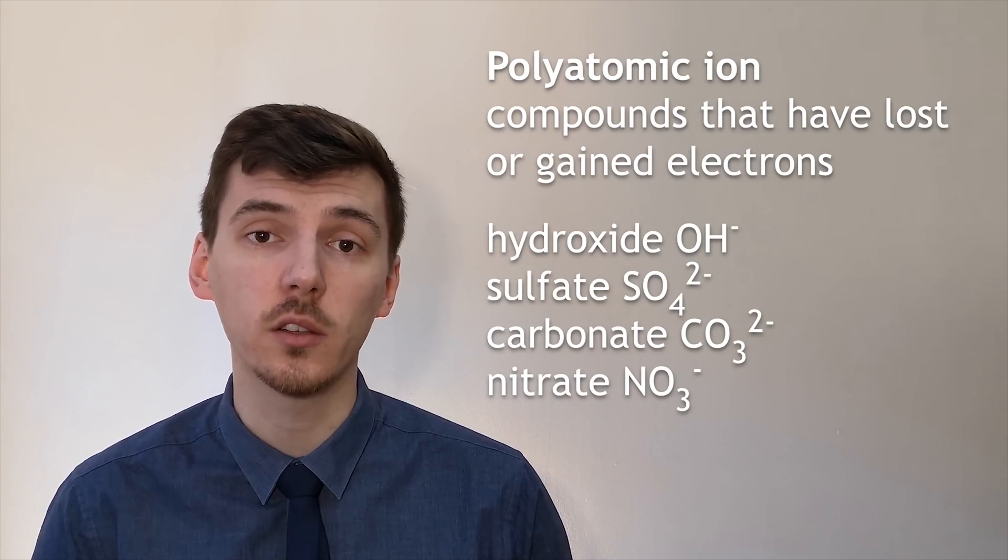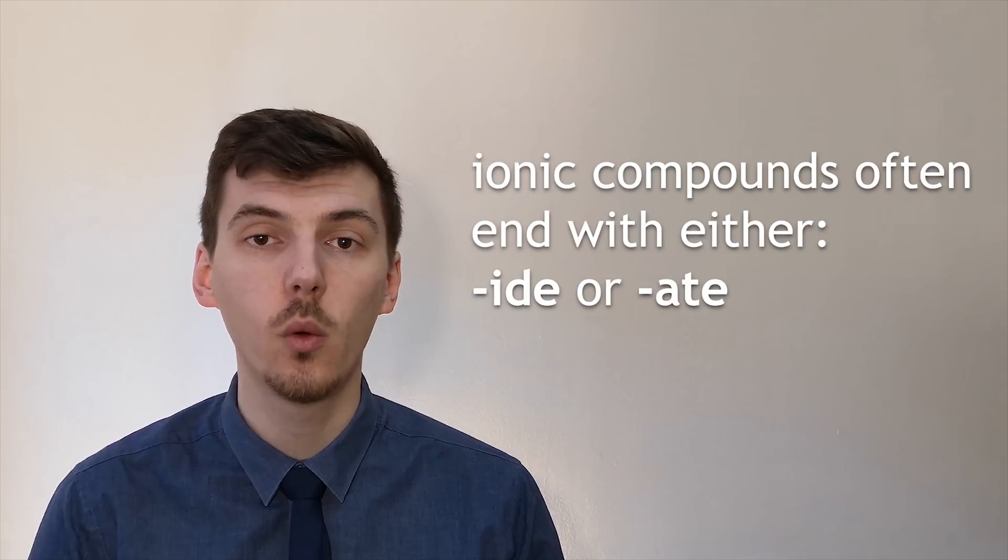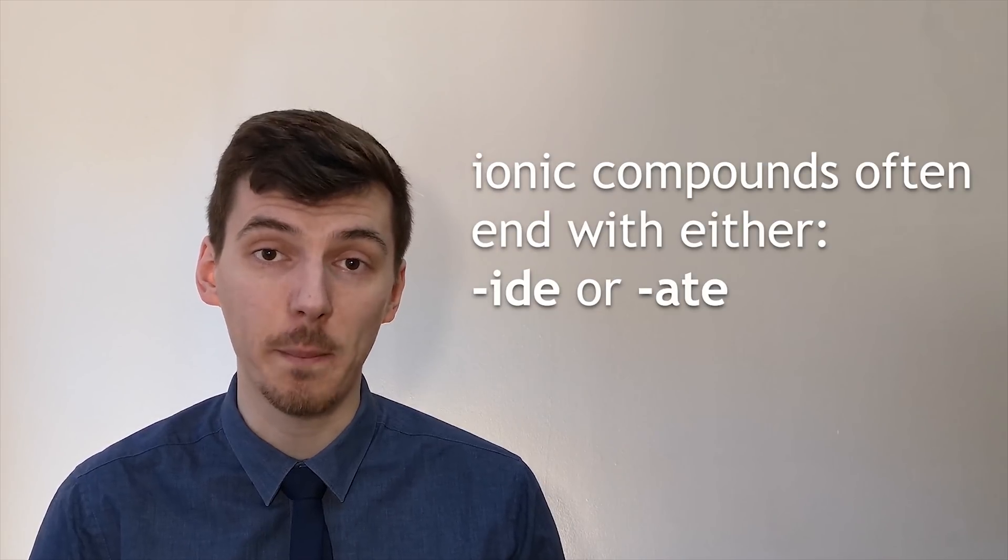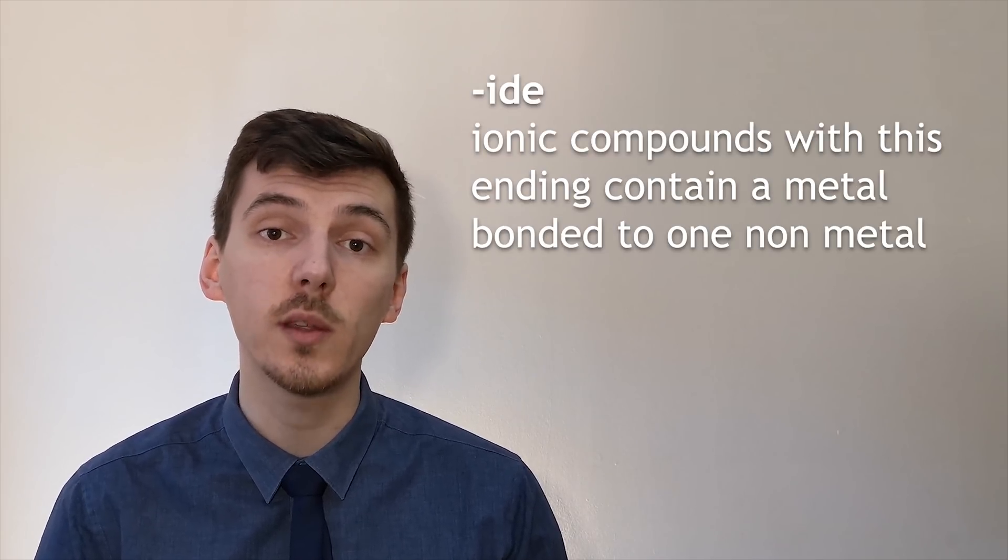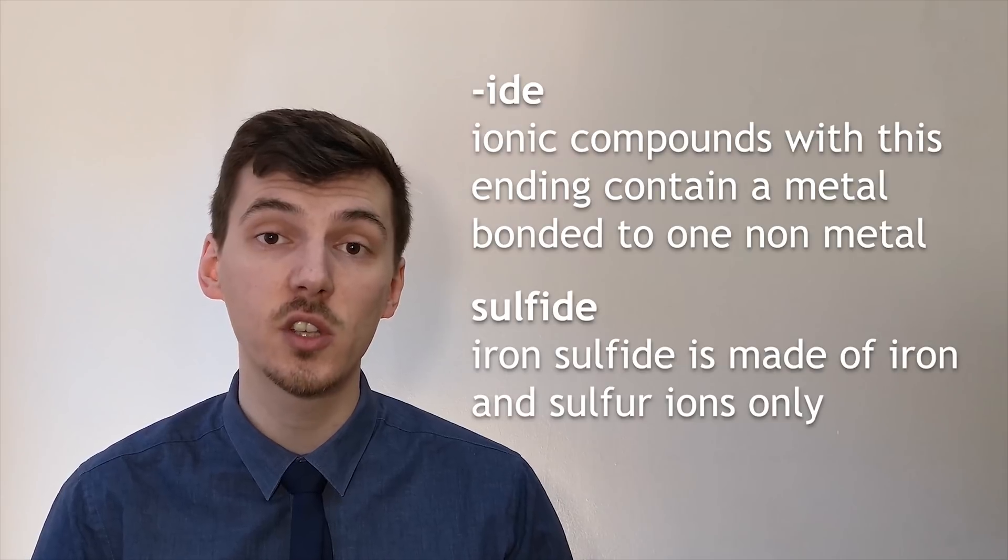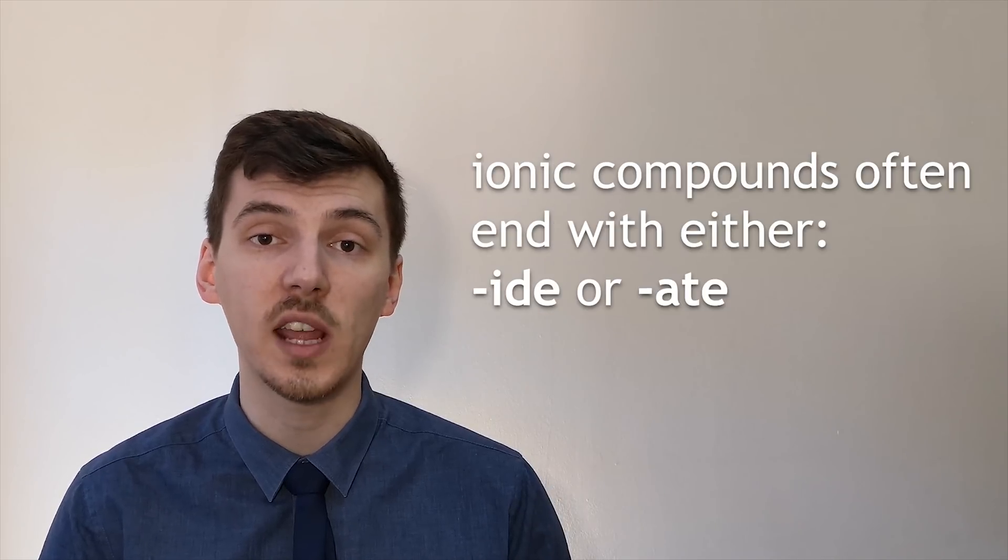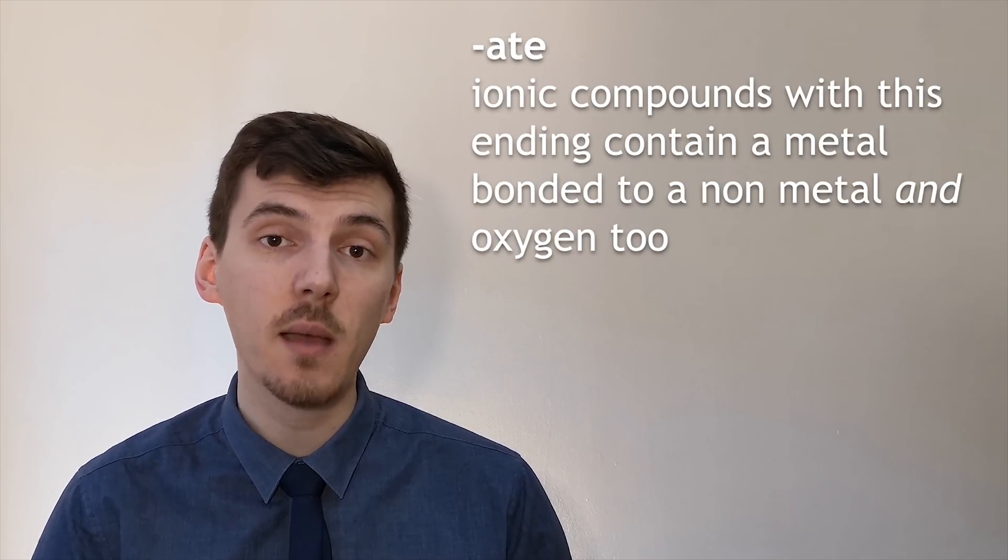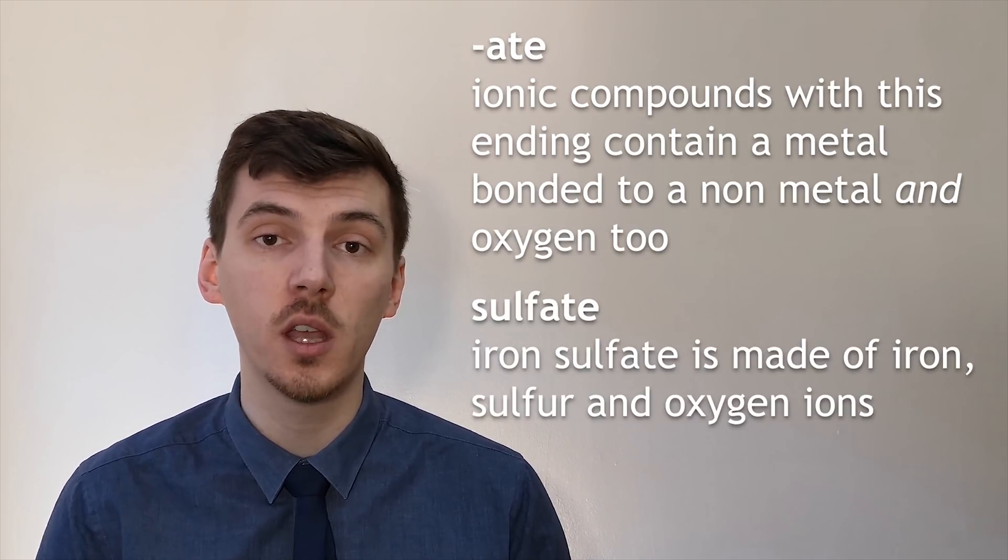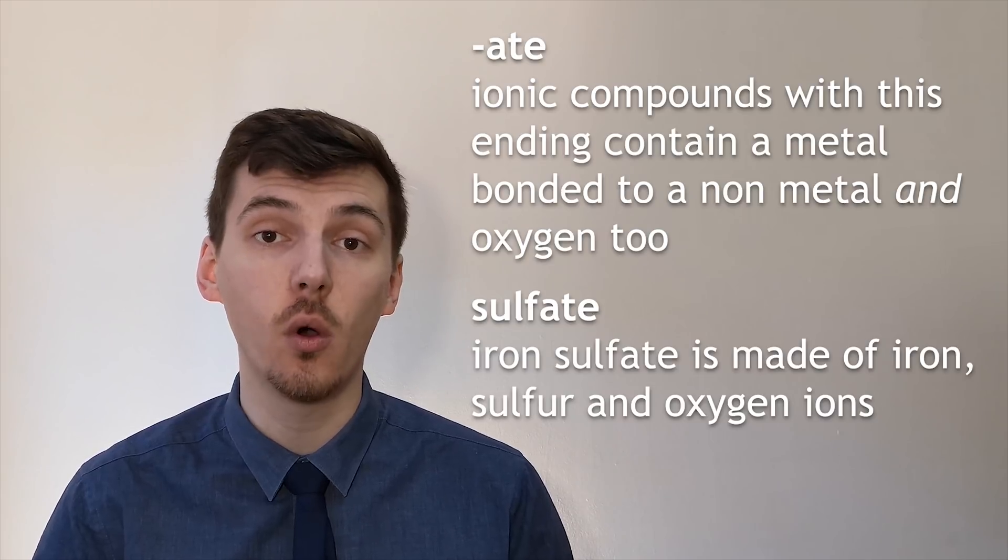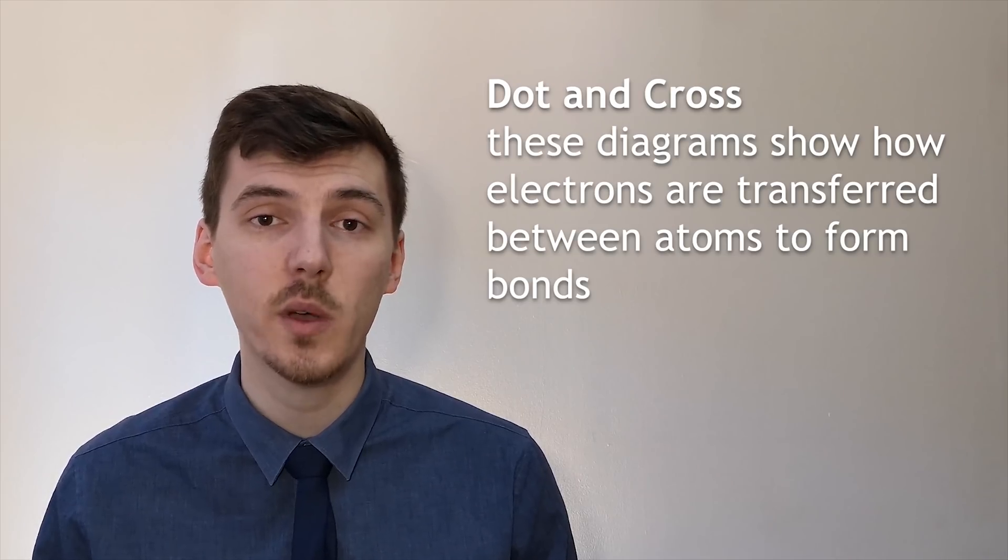Some common polyatomic ions that you need to know and we're going to come across again and again through this course are listed as shown. When an ionic compound forms between a metal and a non-metal it may have the ending -ide. This means that the metal has formed a bond with only one non-metal such as sulfur in sulfide or oxygen in oxide. When an ionic compound's name ends with -ate that means that the metal has formed a bond with at least one non-metal and also with oxygen such as sulfate or nitrate.